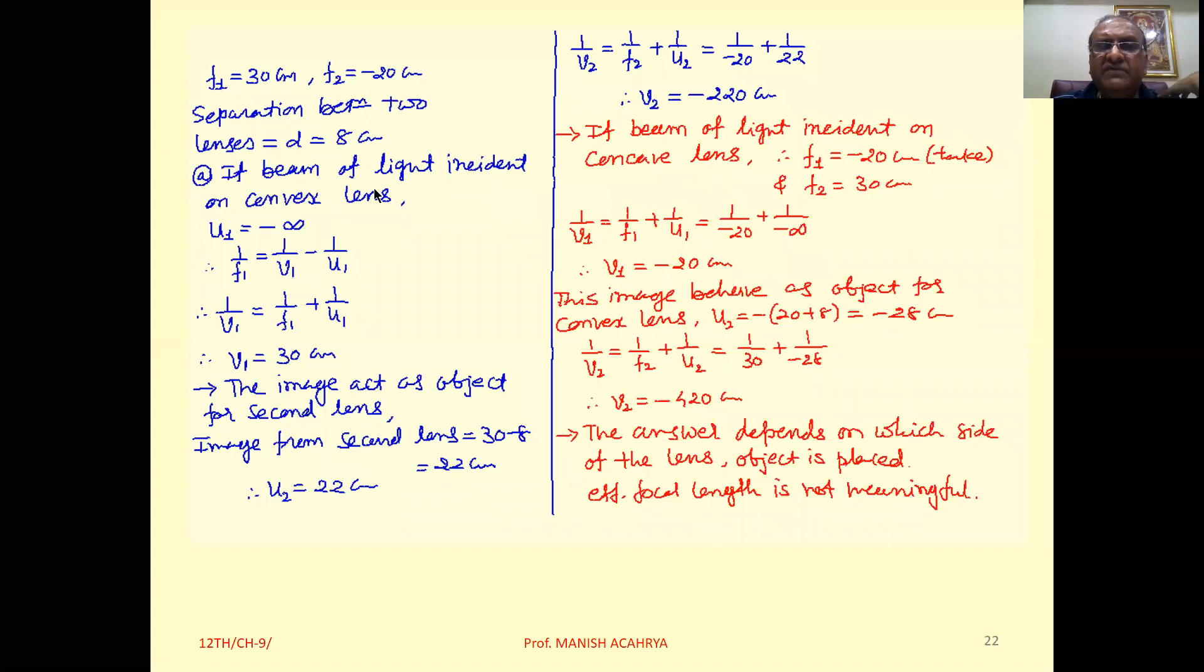First we take if the beam of light is incident on the convex lens. The beam is coming from infinity, so U1 is minus infinity. Obviously, the image formation will take place at the focal point.